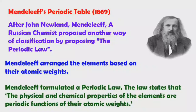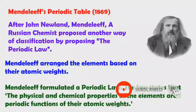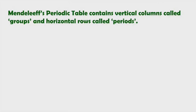The physical and chemical properties of the elements are periodic functions of their atomic weight. Because Mendeleev's periodic table depends on atomic weights, all physical and chemical properties of elements are periodic functions of atomic weight. Mendeleev's periodic table contains vertical columns called groups and horizontal rows called periods.